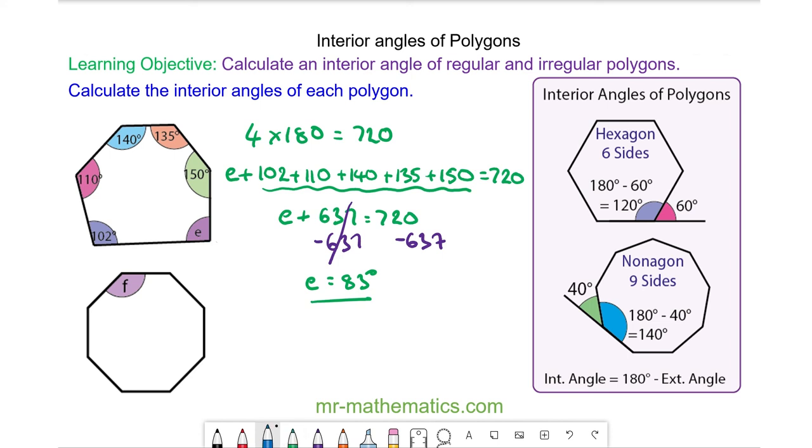And finally for our octagon we have 1, 2, 3, 4, 5 and 6 lots of 180.